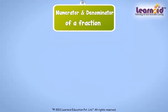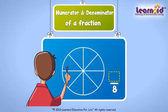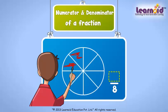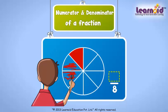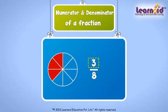Let's see one more example. In the circle, there are total 8 equal parts, so the denominator is 8. Ramesh colored 3 parts of the circle, so the number of parts colored are 3. We write the fraction of the colored circle as 3 by 8.